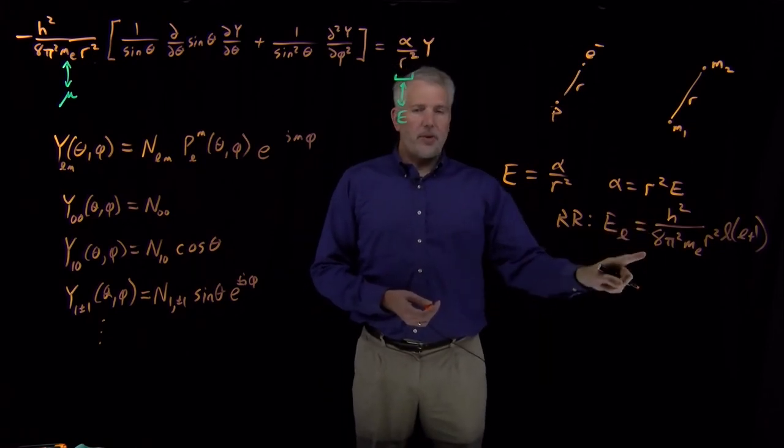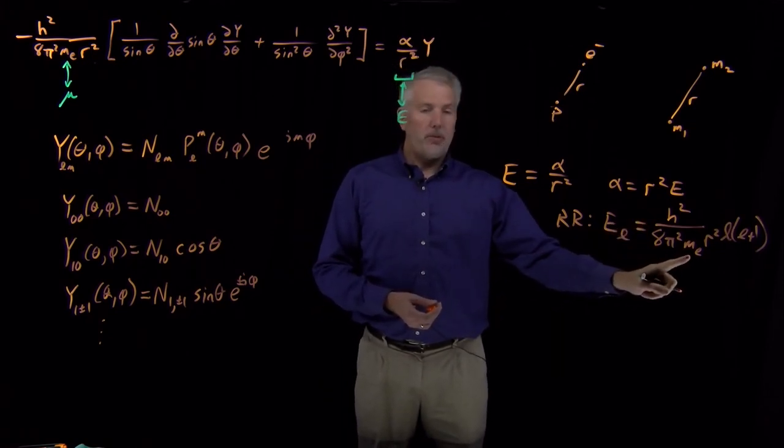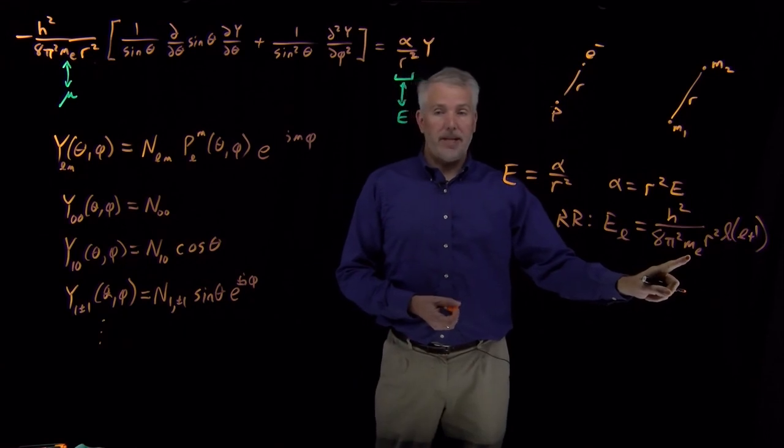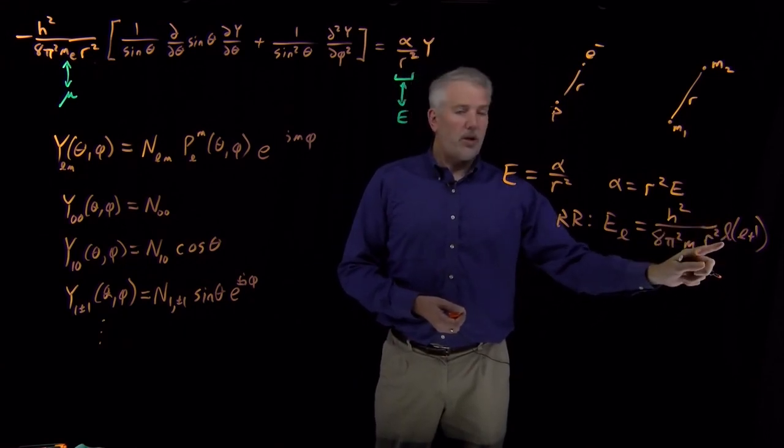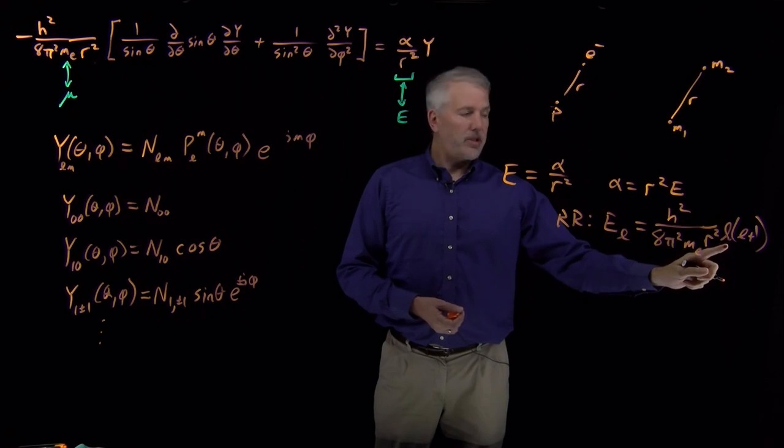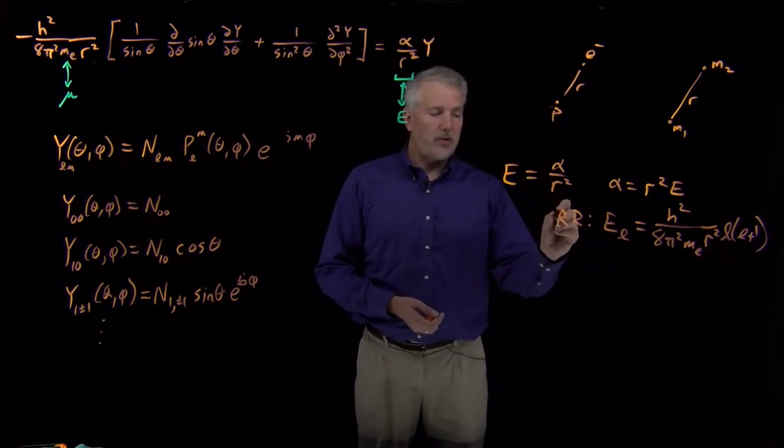Those energies for the rigid rotor, the energy of the l-th wave function, was this collection of constants, h squared over 8 pi squared, used to be a mu for reduced mass, now it's m_e for the mass of an electron, r squared is in the denominator, and that all multiplies the quantum numbers l times l plus 1. Those were the energies of the rigid rotor.